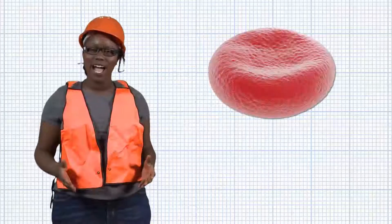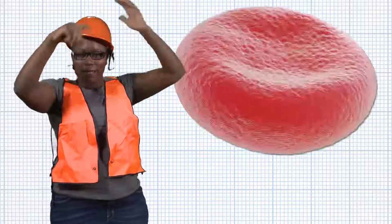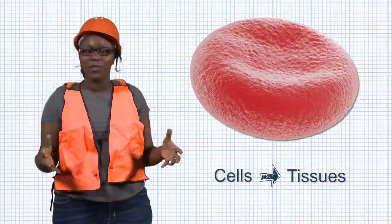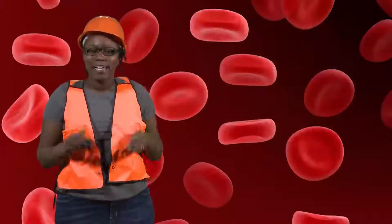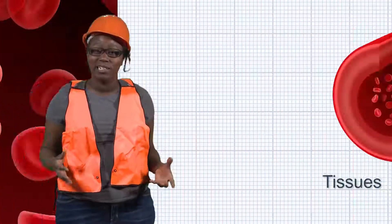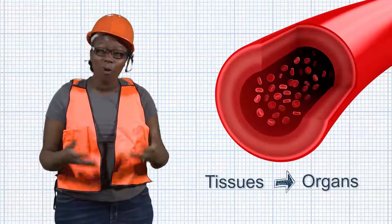All right, check out that red blood cell. Just like bricks come together to form a wall, cells come together to form tissues. And just like walls come together to form buildings, tissues come together to form organs.